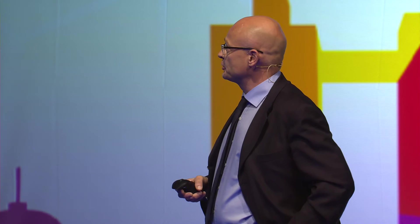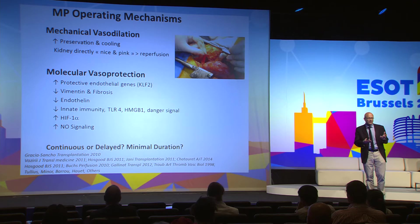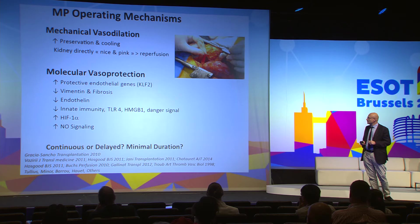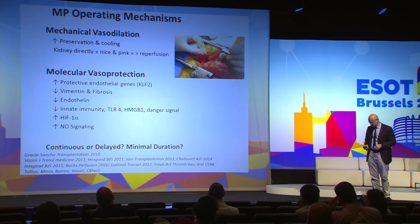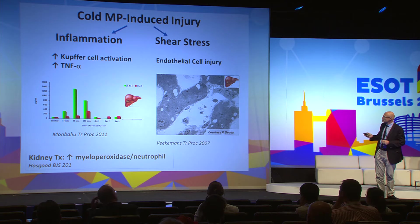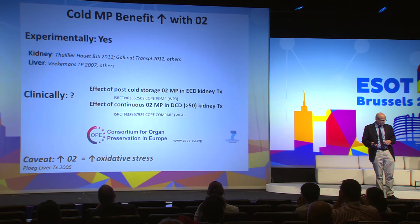The mechanism of this reconditioning effect by machine perfusion is probably combined: it's partly mechanical — vasodilation, opening of the kidneys, better flushing, the kidney looks immediately nice and pink after perfusion. But also more molecular pathways are involved, among them the protection and preservation of flow-dependent endothelial protective genes like KLF2 and other pathways. Cold perfusion can also induce some injury — it can activate Kupffer cells, as in models of liver transplantation, and it can cause shear stress and injure endothelial cells.